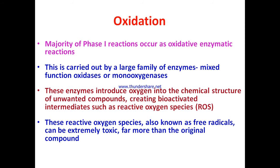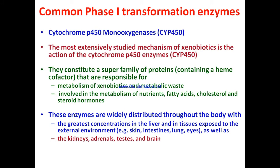The majority of phase one reactions are oxidation reactions using oxidative enzymes. A large family of oxidative enzymes — mixed function oxidases or monooxygenases — are present in cells for carrying out phase one oxidation reactions. These enzymes introduce oxygen into the chemical structure of xenobiotics, creating bioactivated intermediates such as reactive oxygen species (ROS). These reactive oxygen species, also known as free radicals, can be extremely toxic — far more than the original compound — and can lead to diseases like diabetes and cancer.